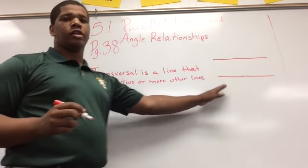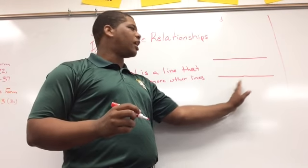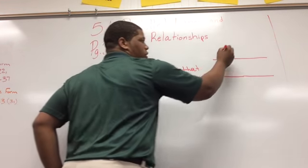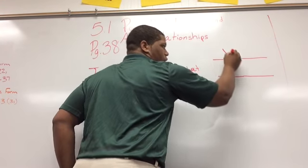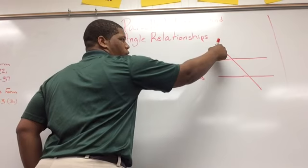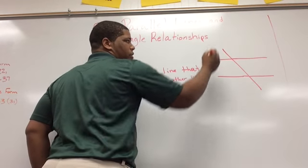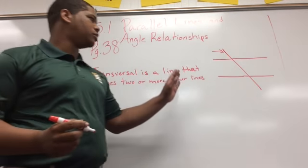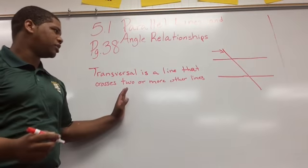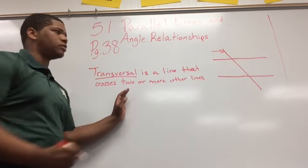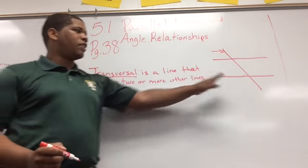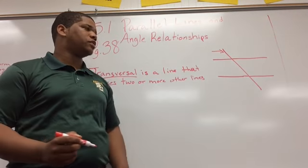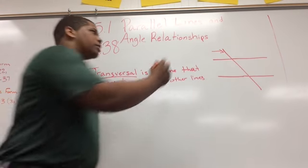Over here I have two lines that are parallel, and a transversal will be this line that crosses these two. I want you to write down this definition and underline transversal, then draw this picture with the arrow pointing to the transversal and label it.